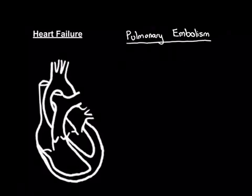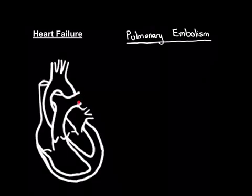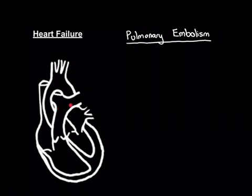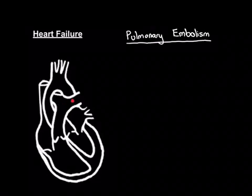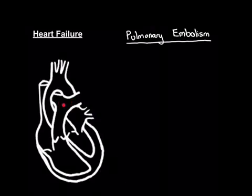They get stuck there and block that pulmonary arterial blood vessel. Depending on how big they are, this can cause a massive problem. If you get a pulmonary embolism blocking one of the main pulmonary arteries, that is a major problem. If it's big enough to block the whole pulmonary trunk — called a saddle embolus, sitting at the split of the pulmonary trunk into the two pulmonary arteries — that can be fatal.